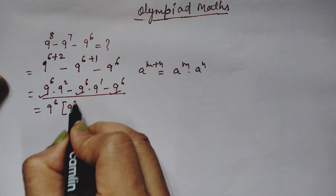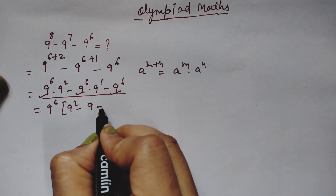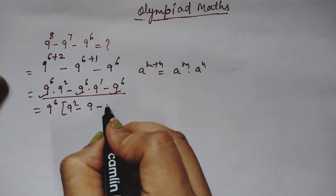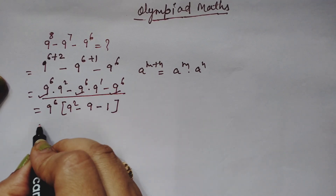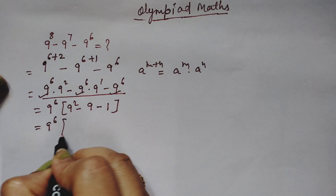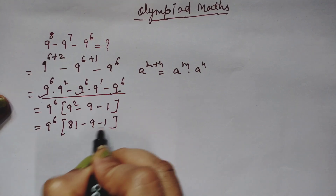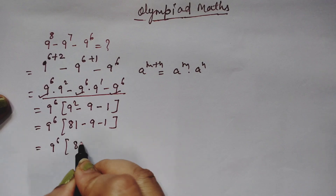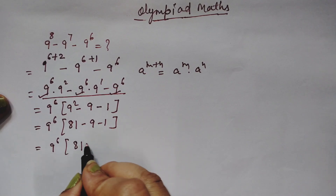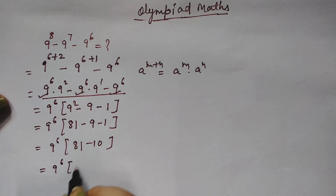After factoring out 9^6, inside the bracket we have 9 squared minus 9 to the power 1 minus 1. Now 9 squared is 81, and 9 to the power 1 is 9, so inside the bracket we get 81 minus 9 minus 1, which equals 71. So we have 9^6 times 71.